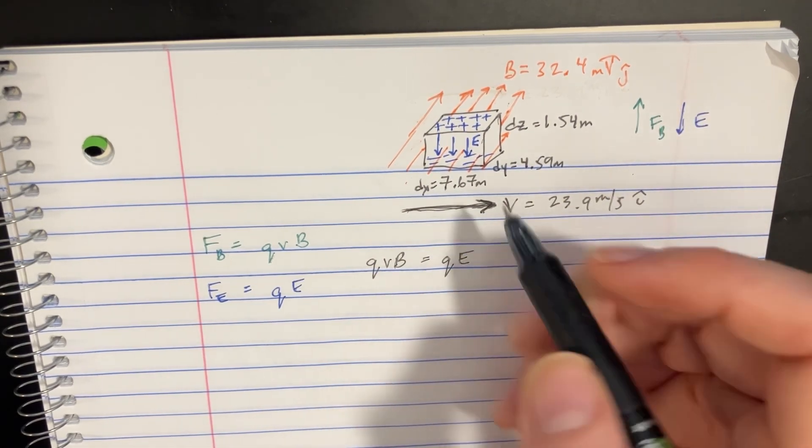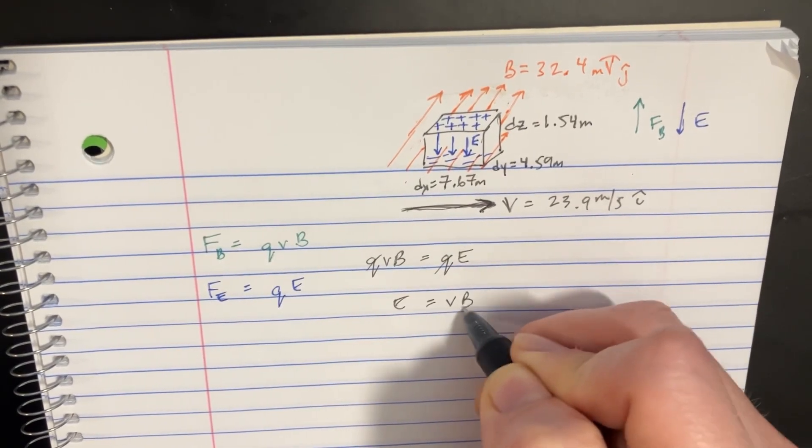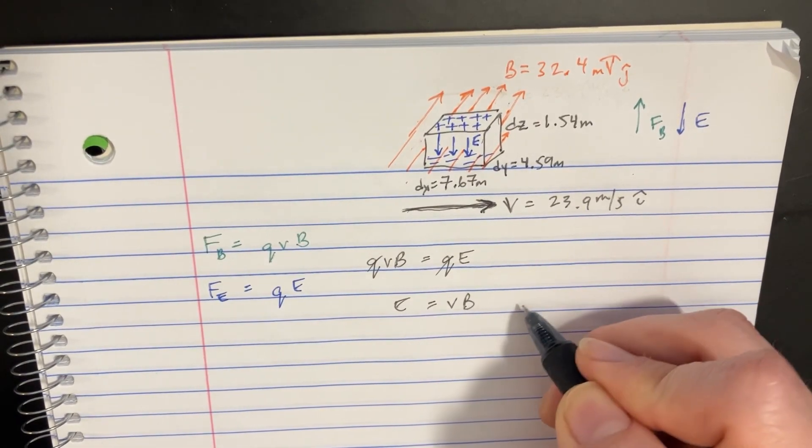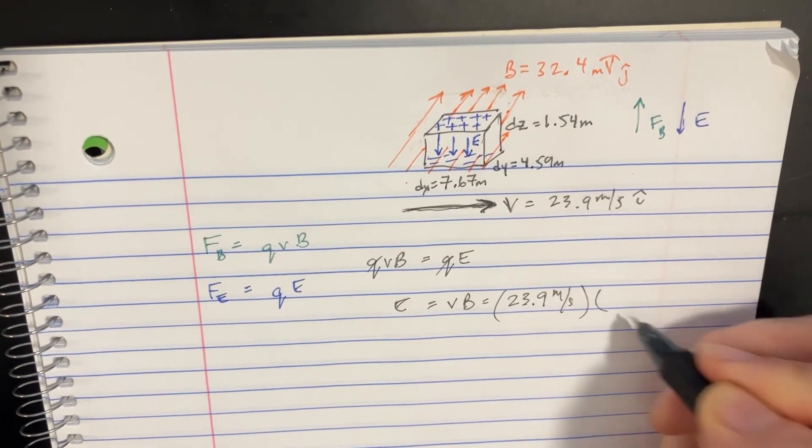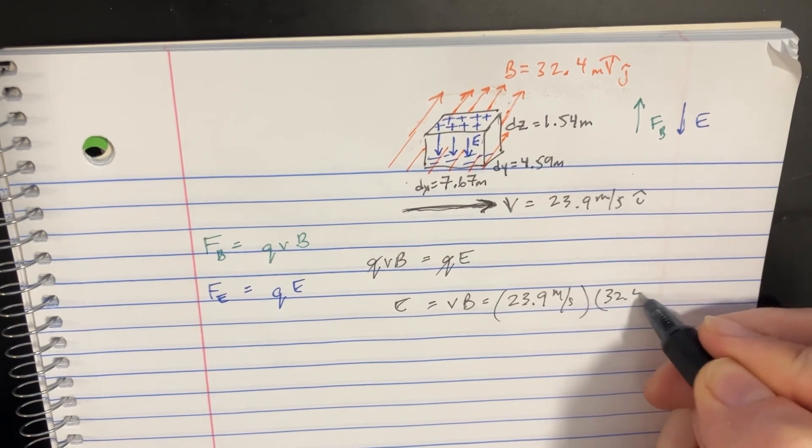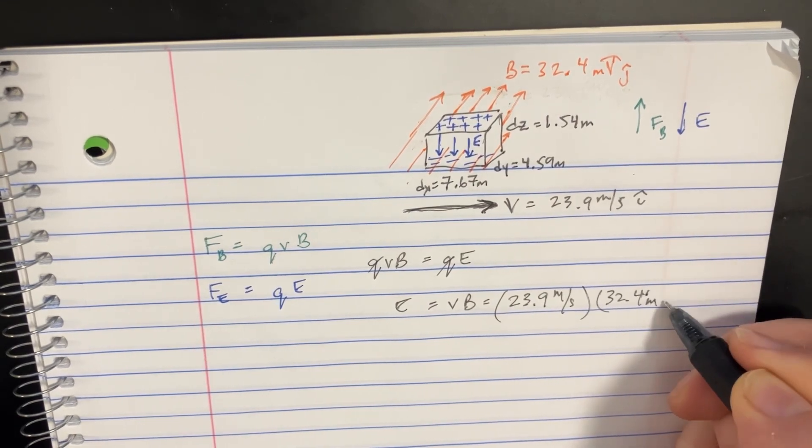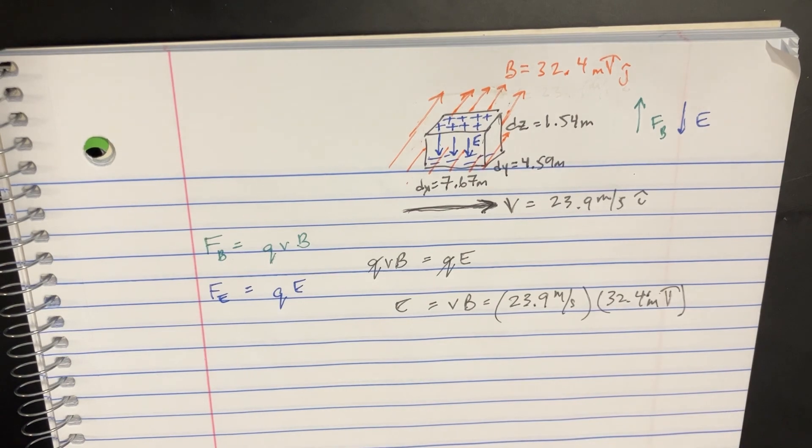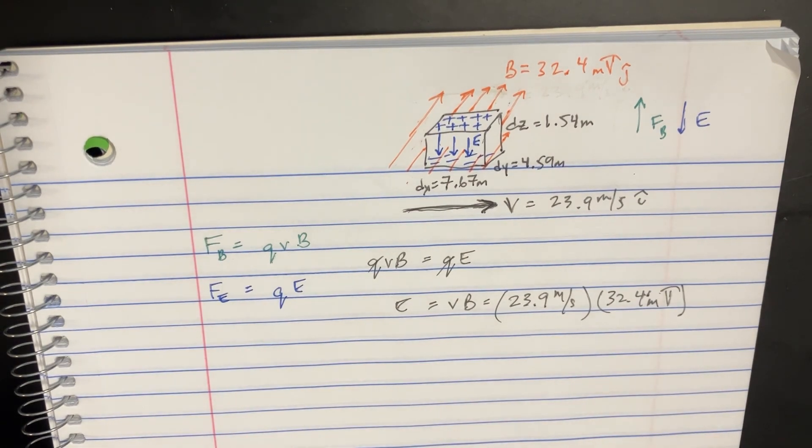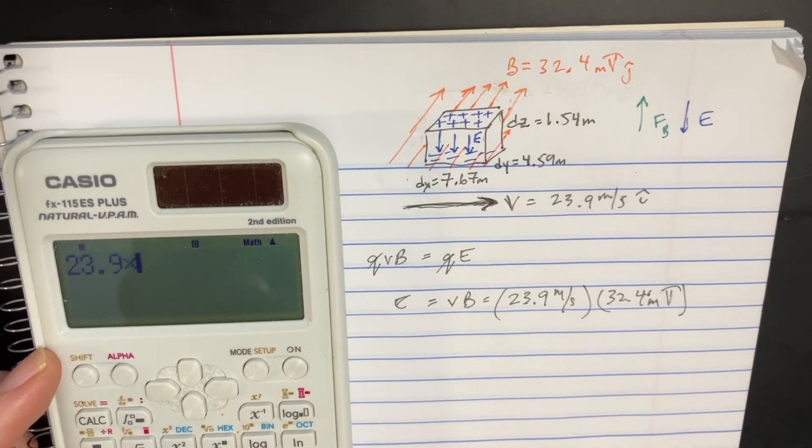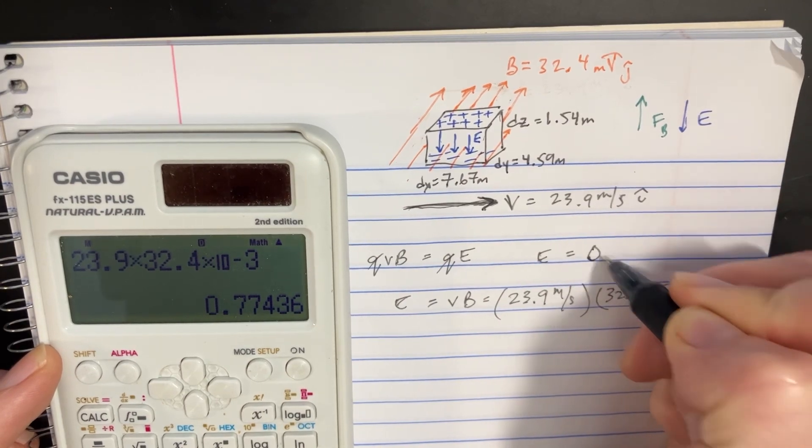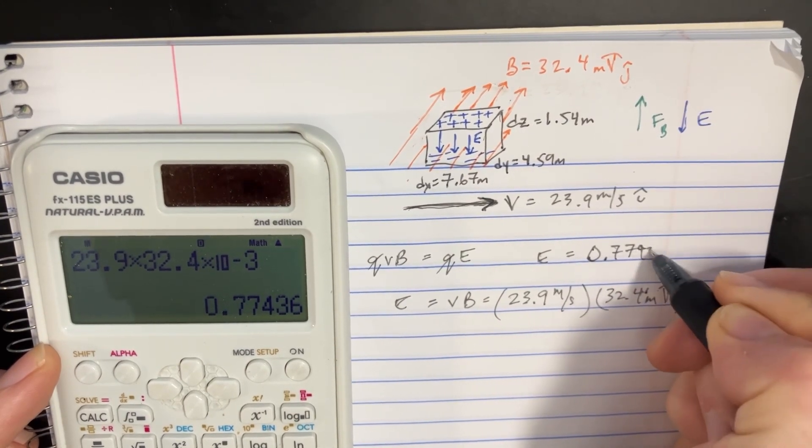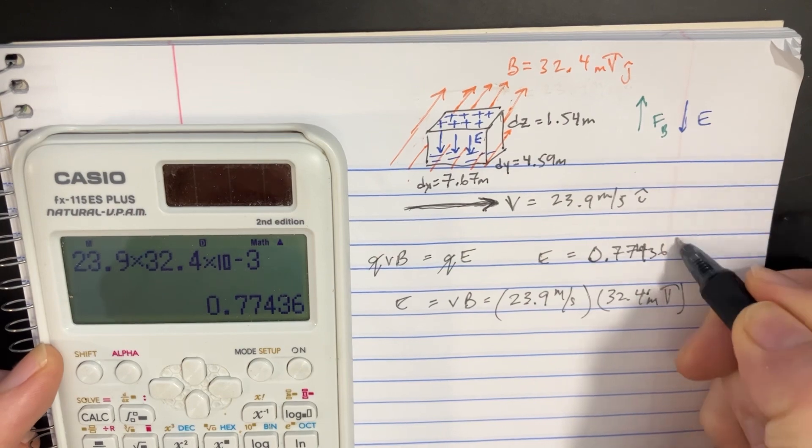So we should be able to cancel this stuff out. We'll get that E equals VB. And from there, we should be able to plug in those numbers: 23.9 times the 32.4 microTeslas. So we'll say that 23.9 times 32.4 is going to be E equals 0.77436, and this should be volts per meter.